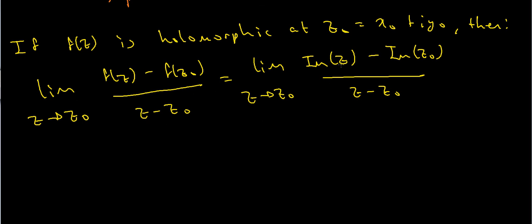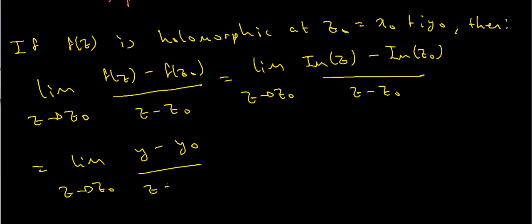Since z = x + iy and z₀ = x₀ + iy₀, the imaginary part of z is just y and the imaginary part of z₀ is just y₀. So this limit becomes the limit as z → z₀ of (y − y₀) / (z − z₀). Now I'm going to break this into two cases: approaching Z₀ horizontally and vertically.